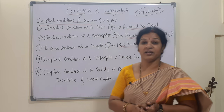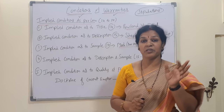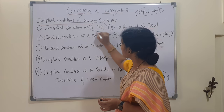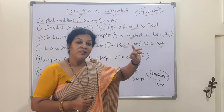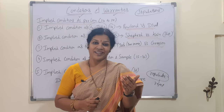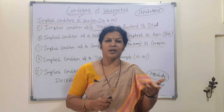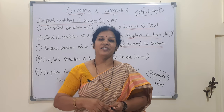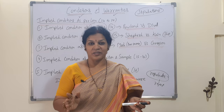The first implied condition is as to title — the title must be clear. Whenever a seller is selling goods, the title must be very clear; if the title is not clear, the buyer cannot purchase the goods. In the case of Rowland versus Divall, a person sold goods — a stolen car. The purchaser argued that the title is not clear, and the court held there was no contract at all since the car was stolen.